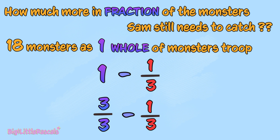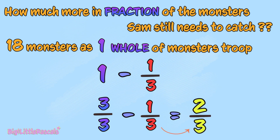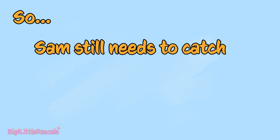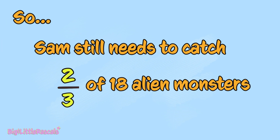3 out of 3 minus 1 out of 3. First, 3 minus 1 gives us 2, and the bottom number 3 follows. The result is 2 thirds. So Sam still needs to catch 2 thirds of the 18 alien monsters in order to save the Earth.